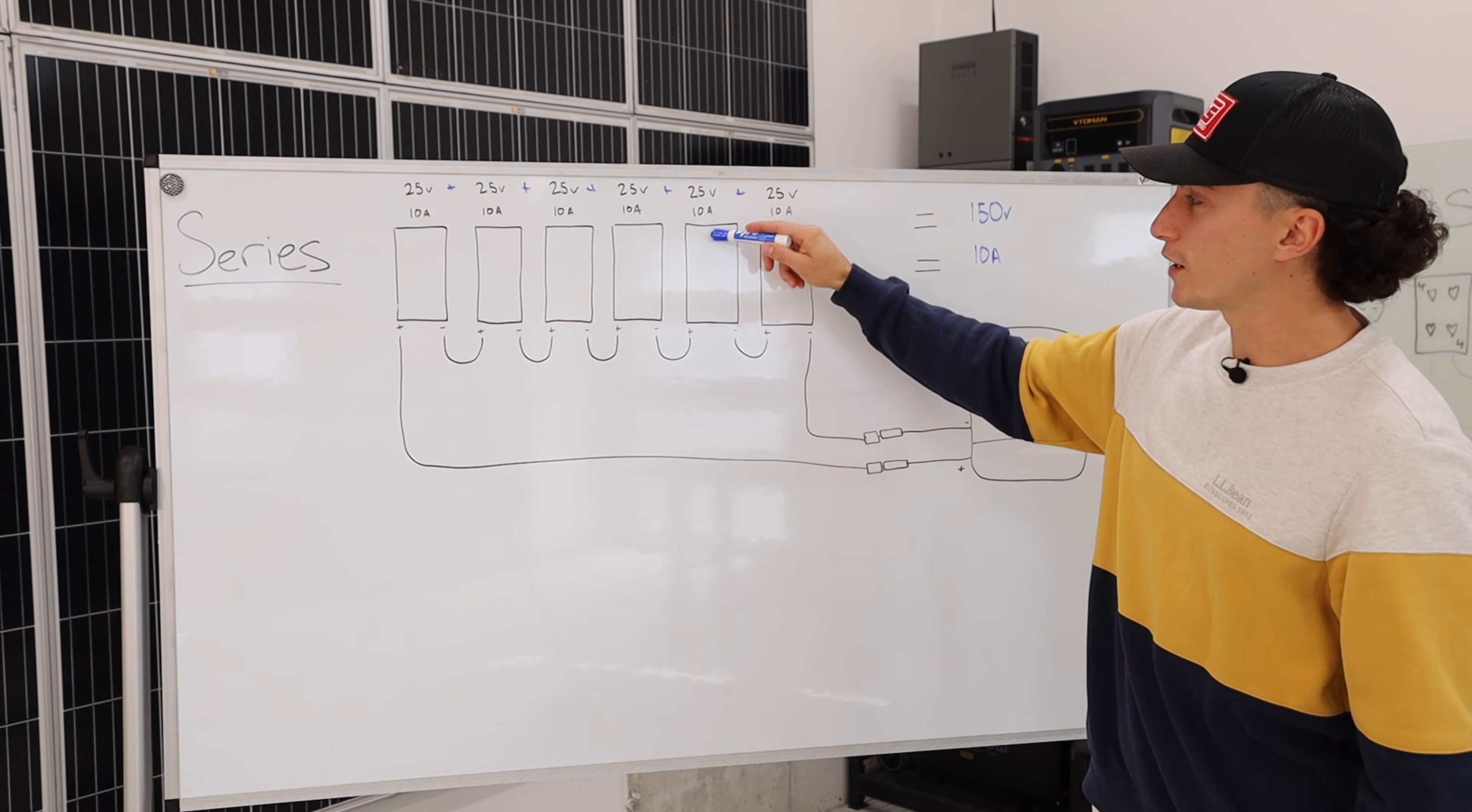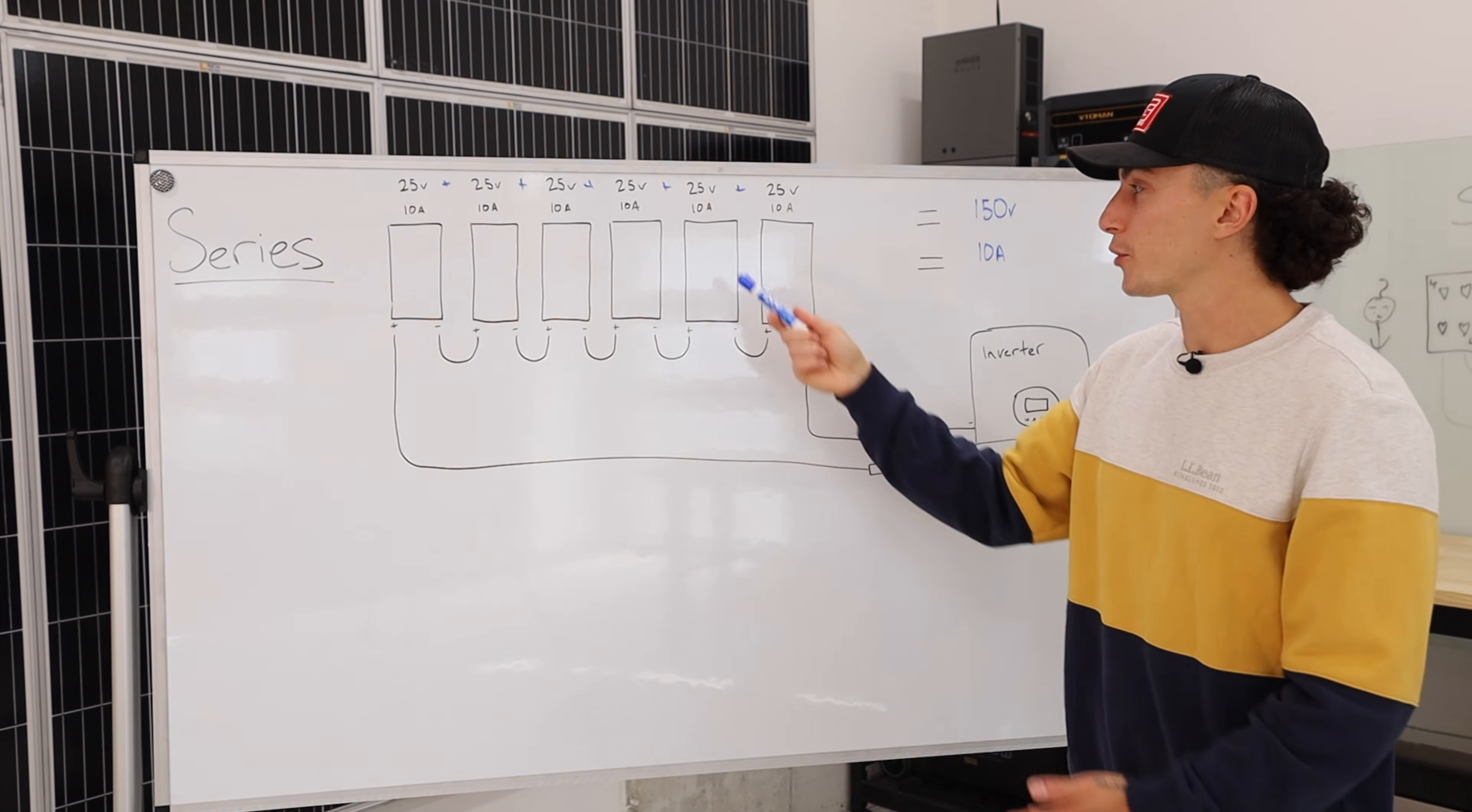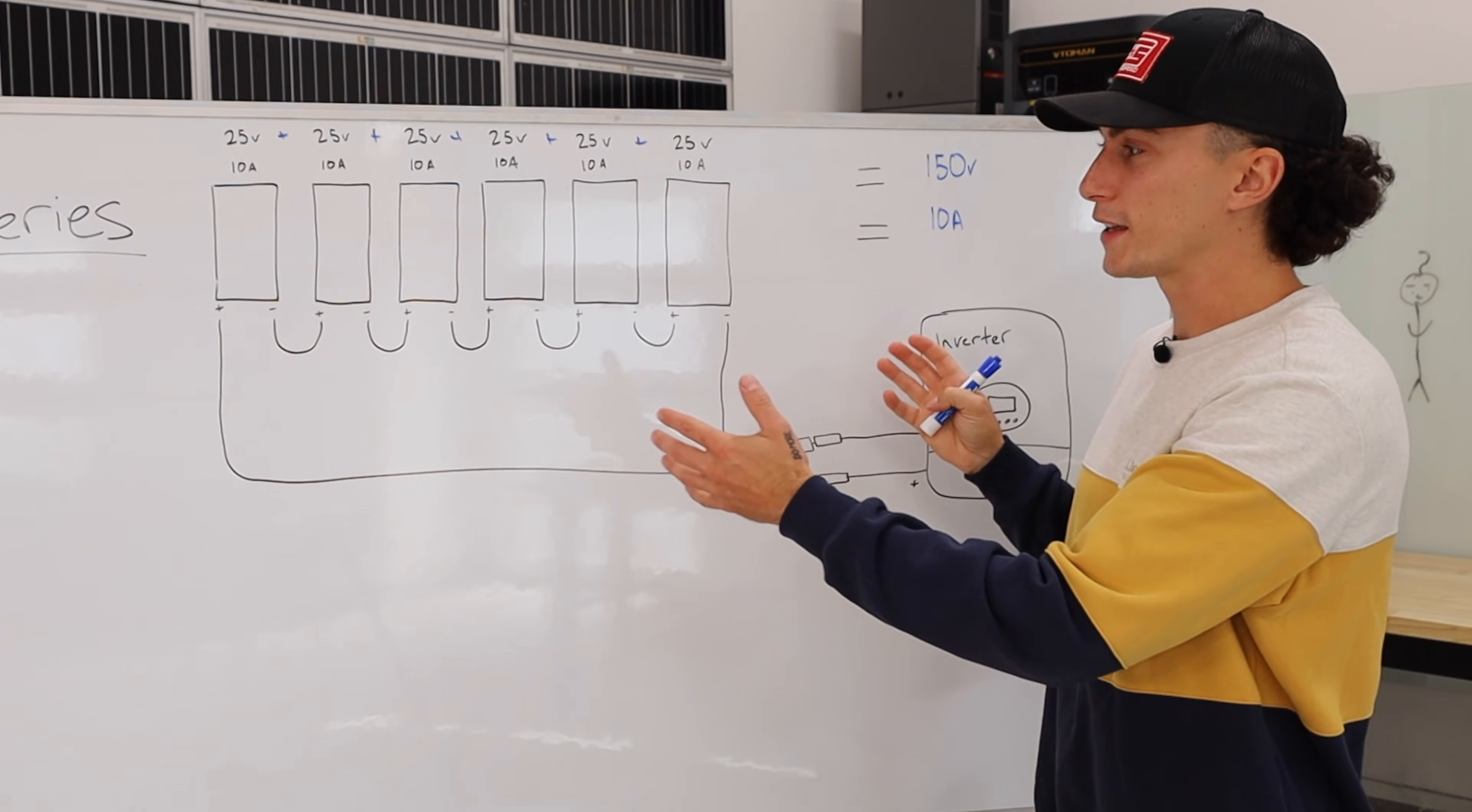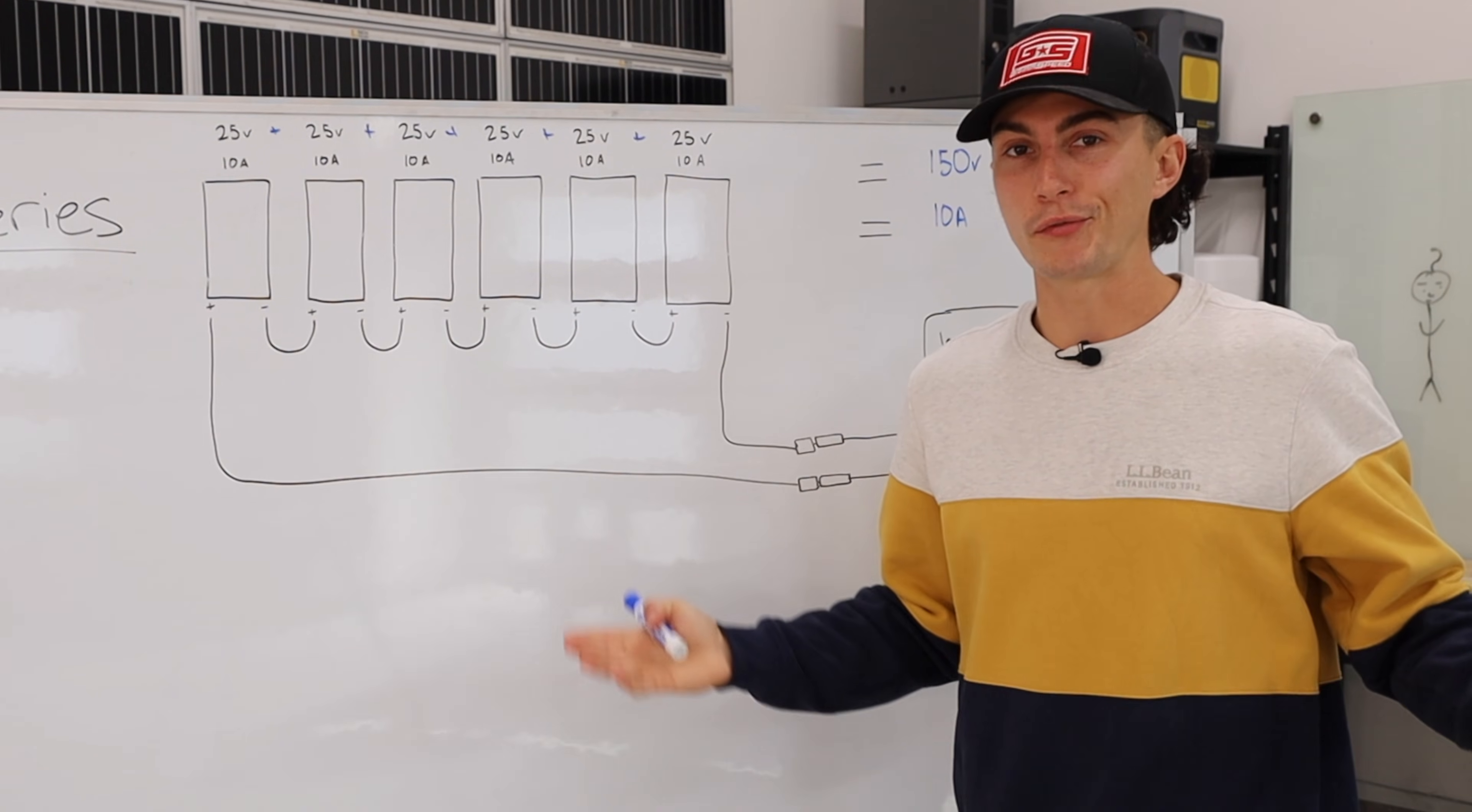The main con with setting something up in series though, is that if you get shade on just one of these panels, or for example this panel starts malfunctioning, it affects the entire array since the entire array is reliant on the panel that came before it.